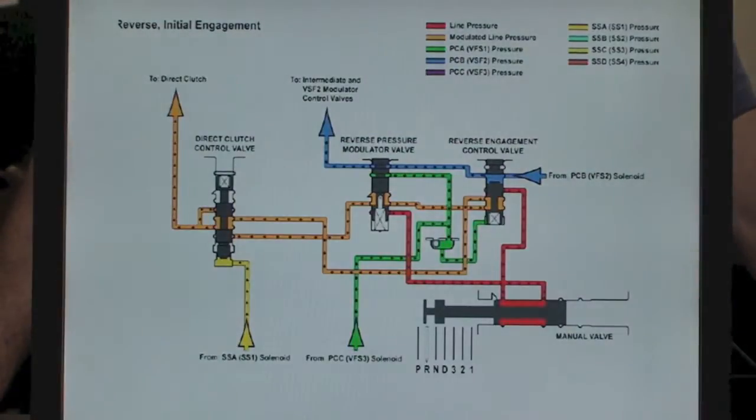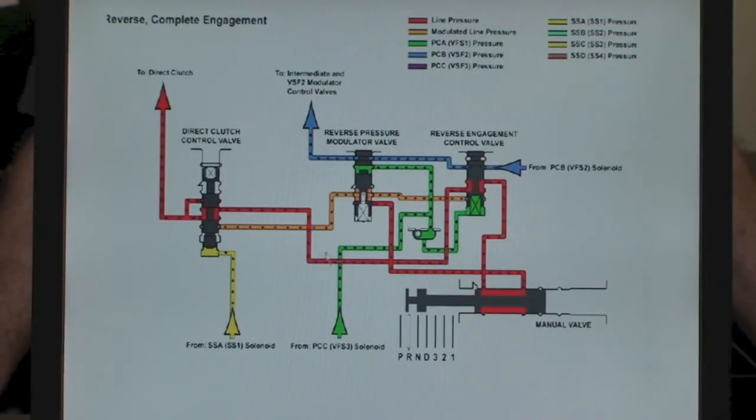This PCC pressure, if you recall, also applies at the bottom of the reverse engagement control valve. As the amps are being lowered, your PCC pressure is increasing gradually. That pressure is acting at the bottom of the reverse engagement control valve and eventually this PCC pressure overcomes the PCC pressure, the blue one here, and it ends up going to what we call the inertia stage. This moves the reverse engagement control valve up. Now your mainline pressure that was right here is going directly undisturbed to apply your direct clutches.